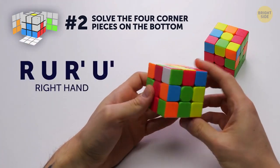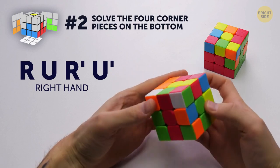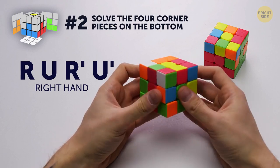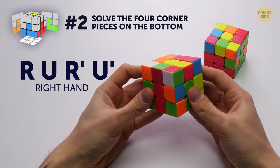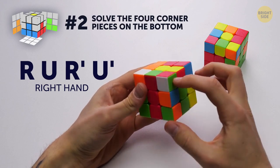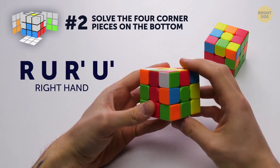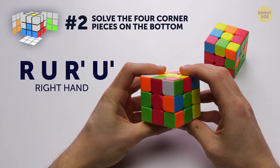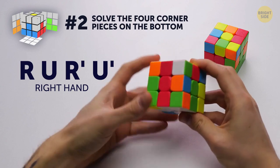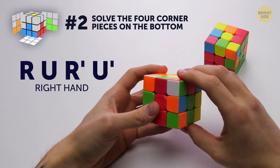Here's where you'll use that R, U, R apostrophe, U apostrophe algorithm for your right hand. Rotate only the top layer of the cube to find a corner that's the same color as the centers of the other sides, and use the algorithm until the corner is in the right place.